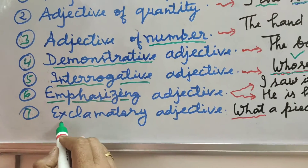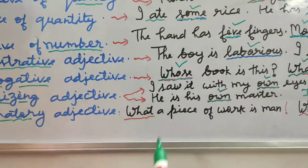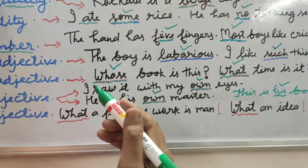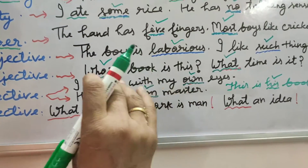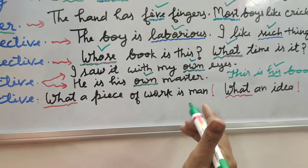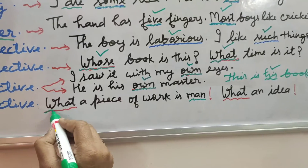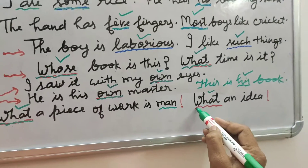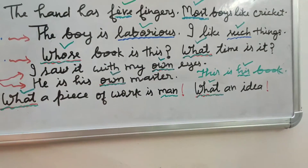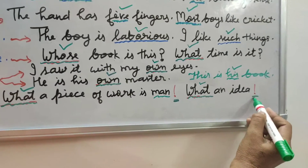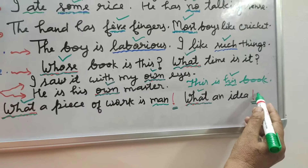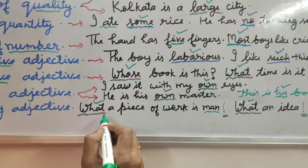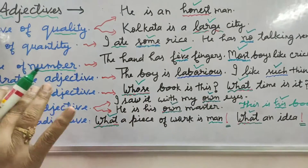Now: exclamatory adjective. Exclamatory means expressing surprise. 'What a piece of work is man!' — the man is of importance, maybe in a positive or negative sense depending on the context. 'What an idea!' — kya picture hai, what an idea. We always use an exclamation mark with exclamatory adjectives. So here 'what' is the exclamatory adjective — it expresses surprise.